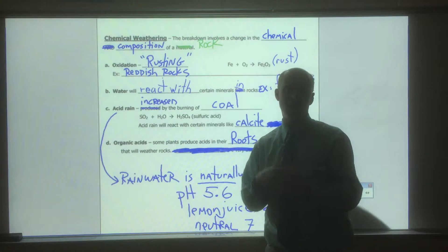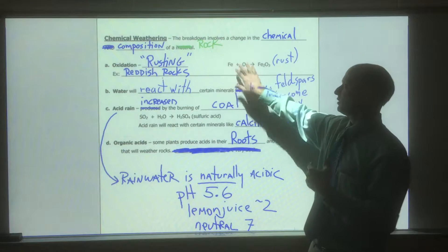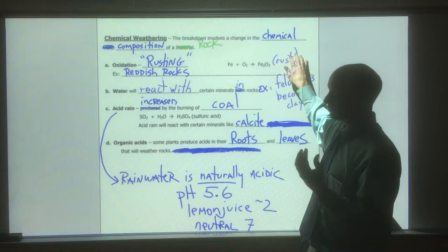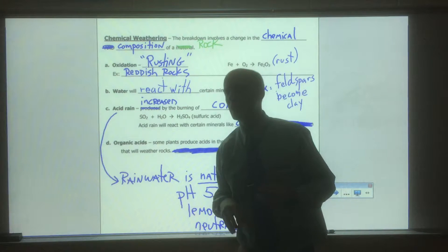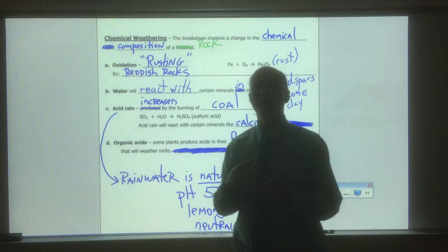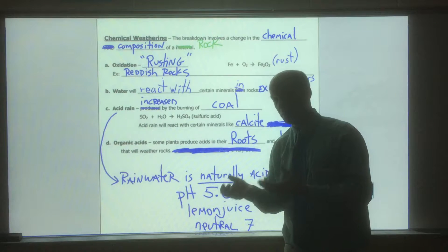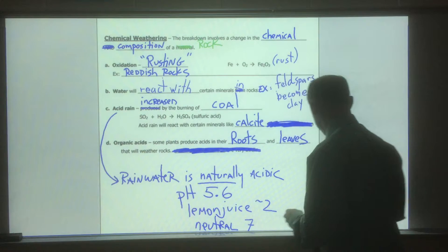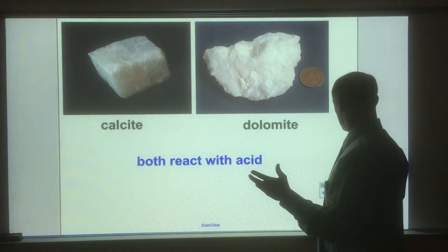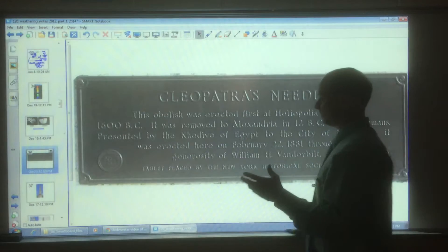The first type is oxidation, which is a reaction with oxygen — we commonly know it as rusting. In this case, Fe (iron) reacts with oxygen to give you iron oxide, Fe₂O₃ — that is rust. Anytime you see a rock that is reddish or reddish-brown, like a rusty color, that has happened to iron in the rock or in its minerals.